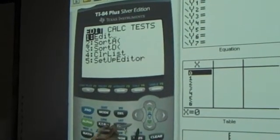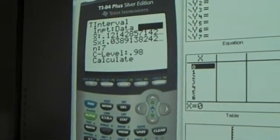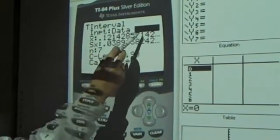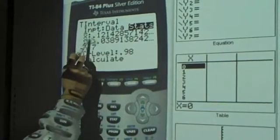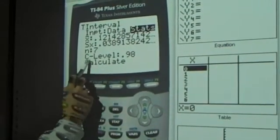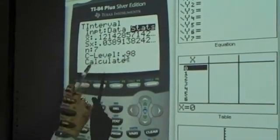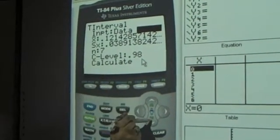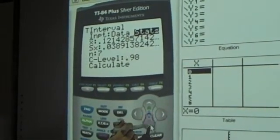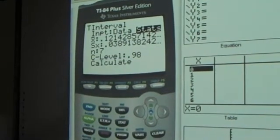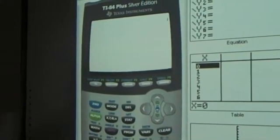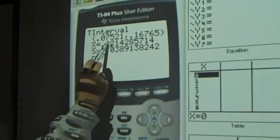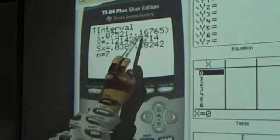And instead of using those to type all the way through it, you go back to stats, go to tests this time, and click number eight. And that's a T-interval. And then you're on stats, and you have your mean and standard deviation. And you want to make sure that your level is 98%, because that's what it was in the problem. Then you come all the way down here, and you go to calculate, and you get your answer of .075 and .167.